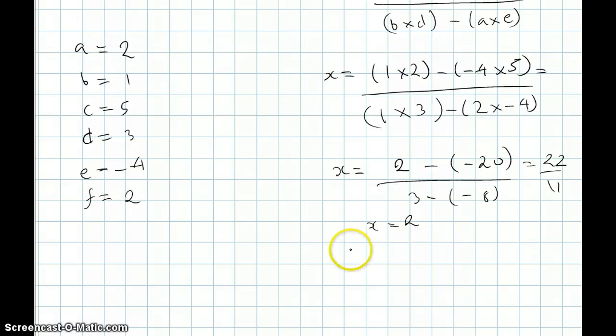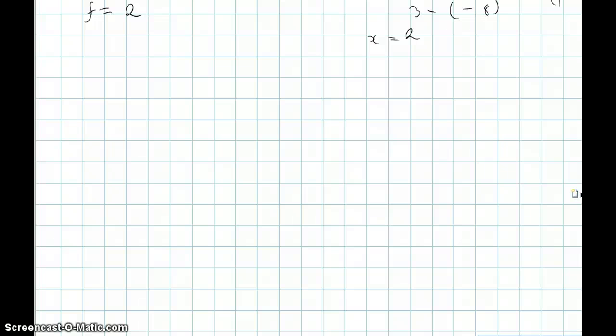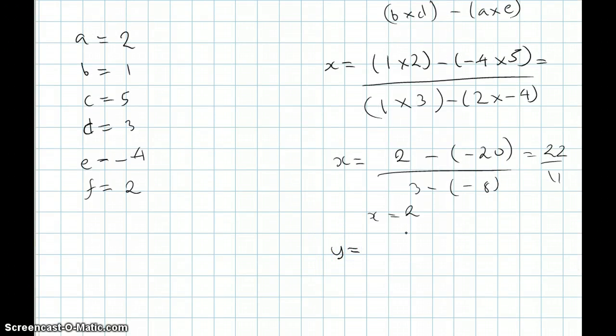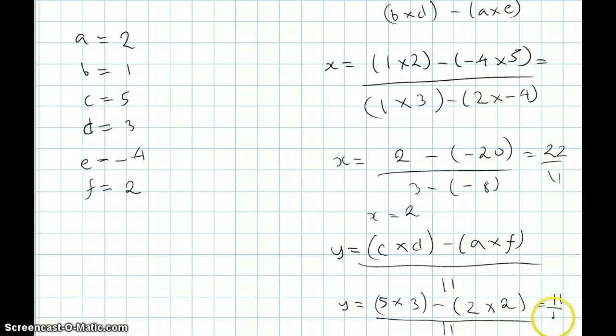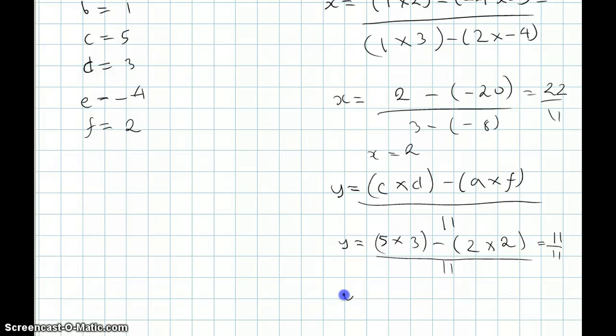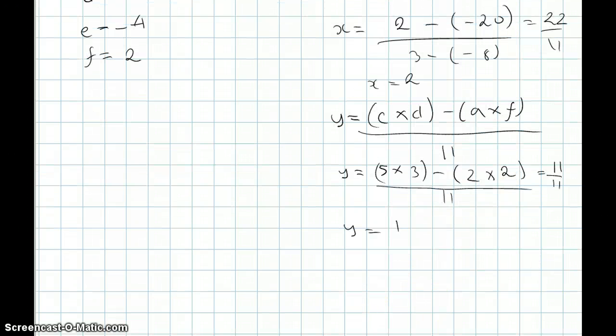And as for y, we would use the same equation. y is equal to c times d minus a times f over 11. So then that would give us, c is 5 times 3 minus 2 times 2 over 11. That gives us 11 over 11. Therefore, y is equal to 1. As you can see, we got our x and we got our y value.